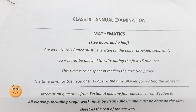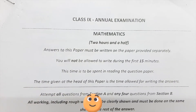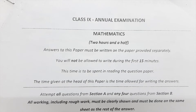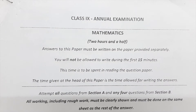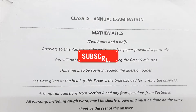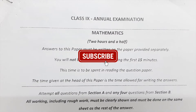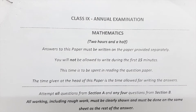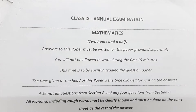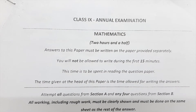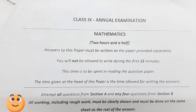Section B has seven questions and we have to attempt any four of them. During the first 15 minutes, ideally you should read Section B first and decide which questions to attempt — where you will lose the least marks — and then come to question number 1. Now are we ready to solve the question paper? Let's begin.